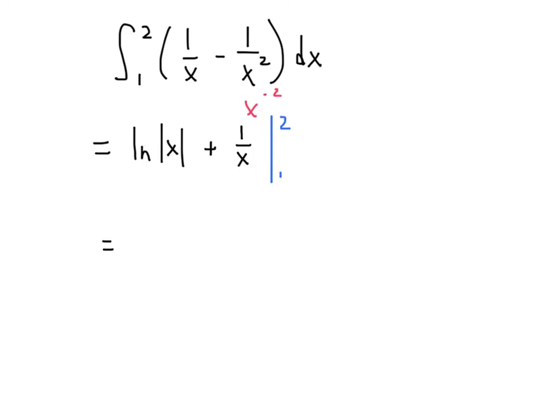I plug in a 2, and I get the natural log of the absolute value of 2, which is natural log of 2, plus 1 half. Plug in the bottom number 1, I get the natural log of the absolute value of 1, which is 1, natural log of 1, plus 1 over 1, which is 1.